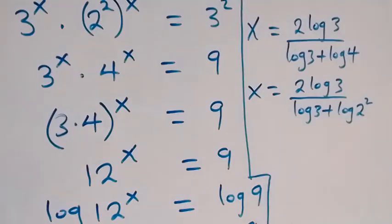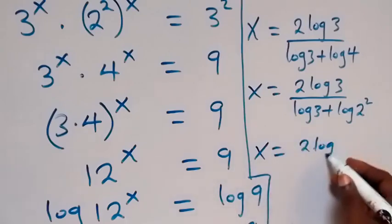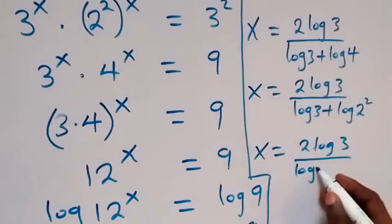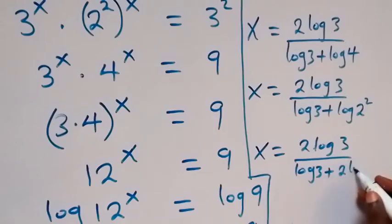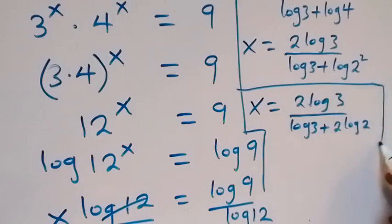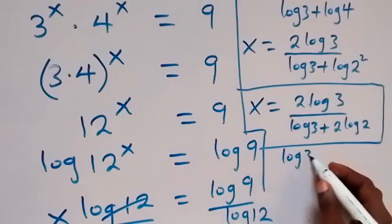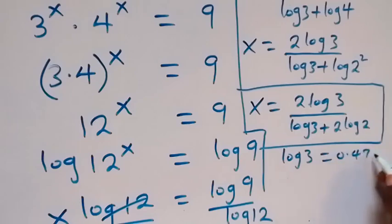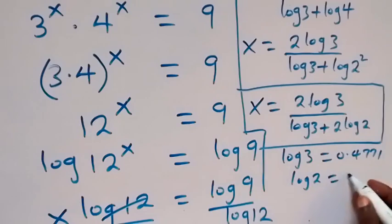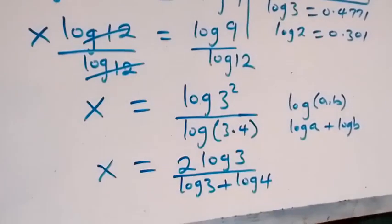Bringing the power of log 2 squared to the front, we get our final simplified form: x equals 2 log 3 divided by log 3 plus 2 log 2. We can substitute decimal values — log 3 is approximately 0.4771 and log 2 is approximately 0.301 — to get an approximate decimal value of x. Thank you for watching, don't forget to subscribe for more exciting videos.